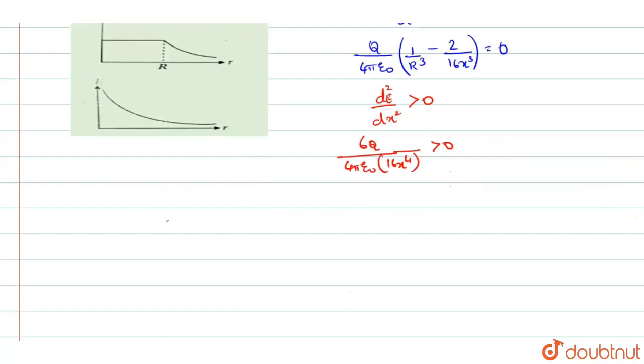So, they have told you the condition, they have mentioned you the condition that at X equals R by 2, half of the distance when you are taking, E will be minimum. E will be minimum.